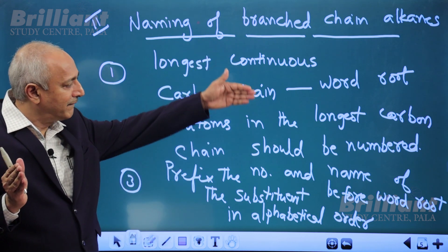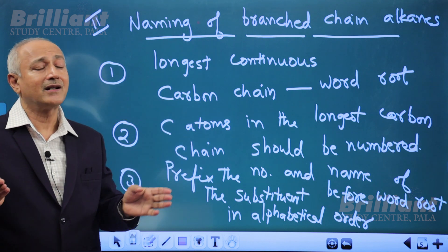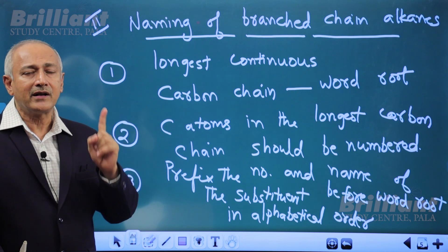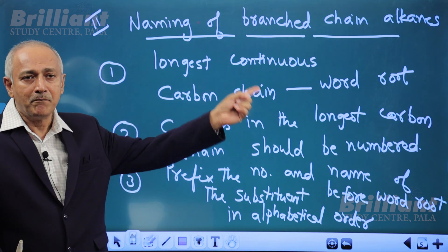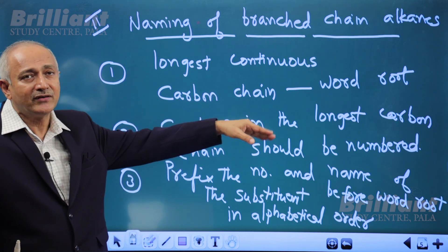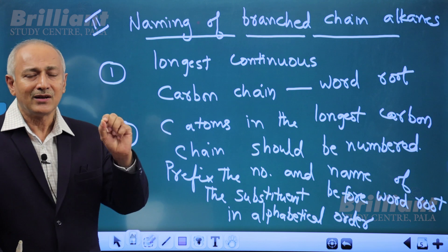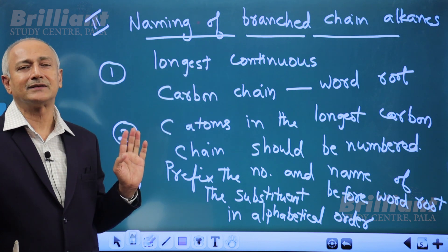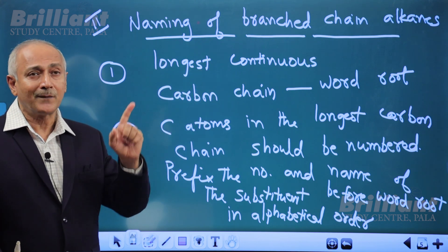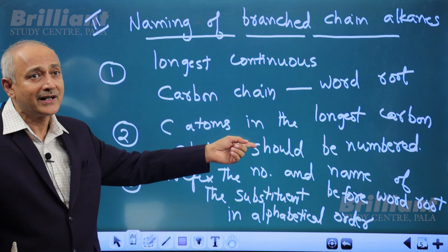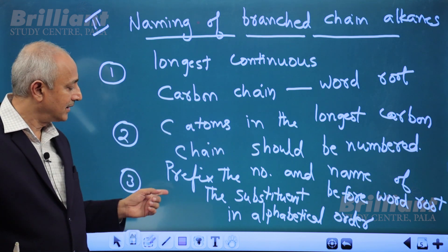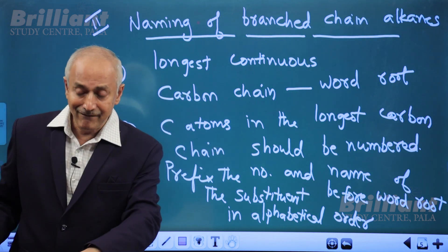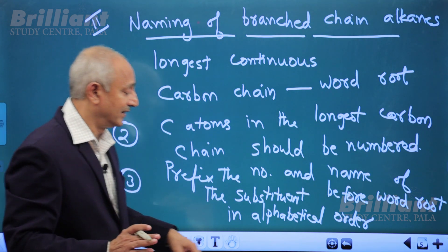So these are the first three rules for naming branched chain alkanes. Rule one: consider the longest continuous carbon chain and derive the word root from the number of carbon atoms. Rule two: number the carbon atoms so that branches get the minimum number possible. Rule three: prefix the number and name of each substituent before the word root in alphabetical order. Now we consider an example.